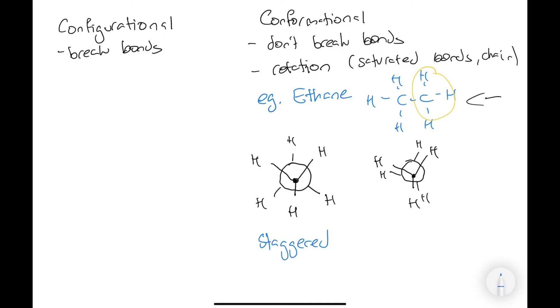And this is called an eclipsed. However, ethane is constantly rotating between these two isomers. However, we can kind of infer which one is the more stable one.